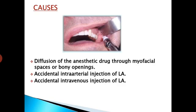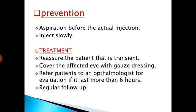Causes for this complication include diffusion of the anesthetic drug through myofascial spaces or bony openings, and accidental intra-arterial or intravenous injection of local anesthesia. Prevention: aspirate before the actual injection and give the injection of local anesthesia very slowly. Treatment: reassure the patient that it is transient, cover the affected eye with gauze dressing, refer the patient to an ophthalmologist for evaluation if it lasts more than 6 hours, and perform regular follow-up.